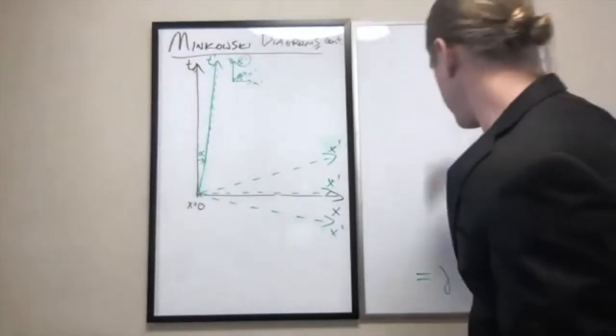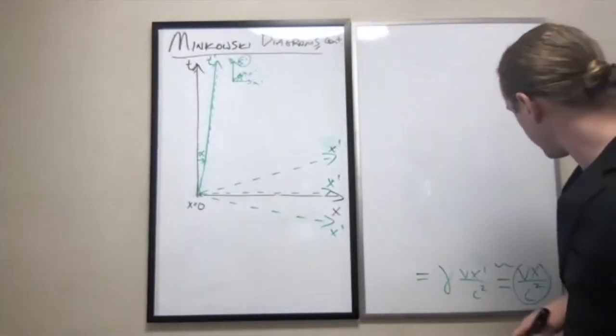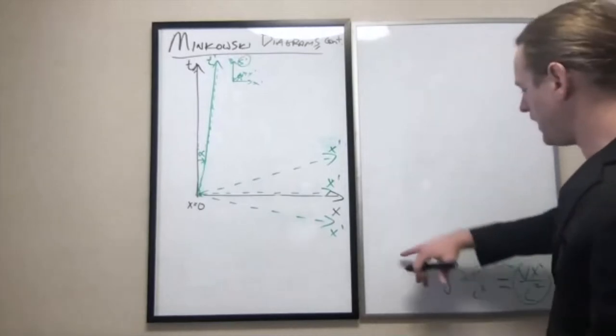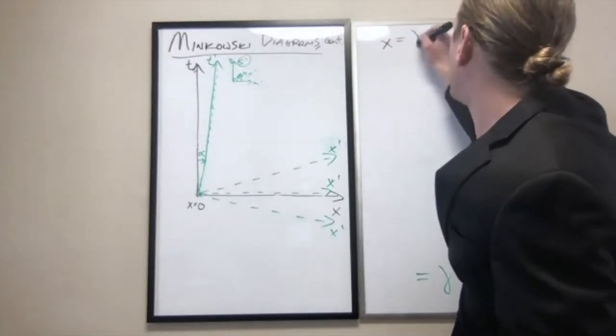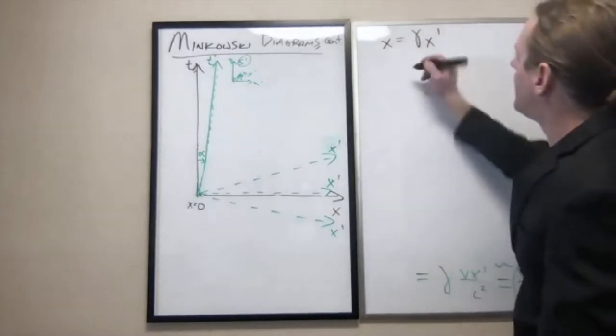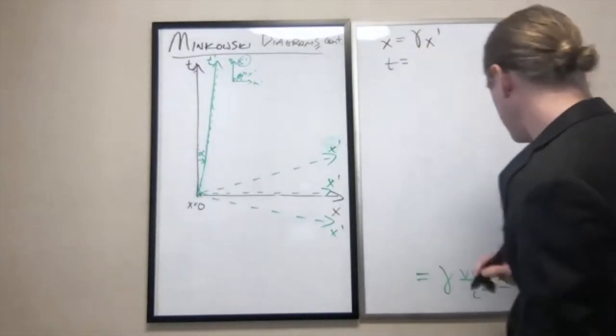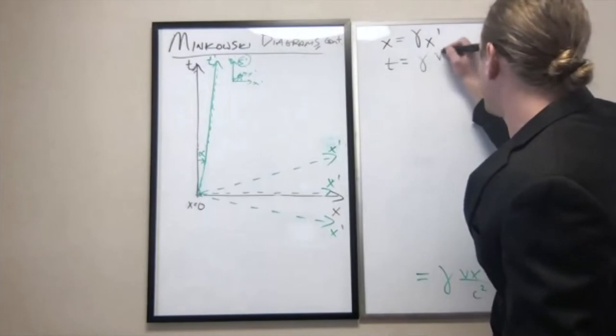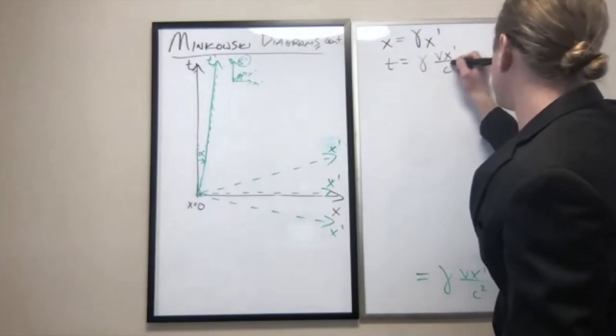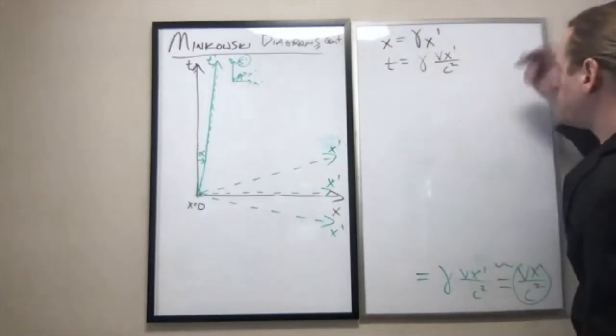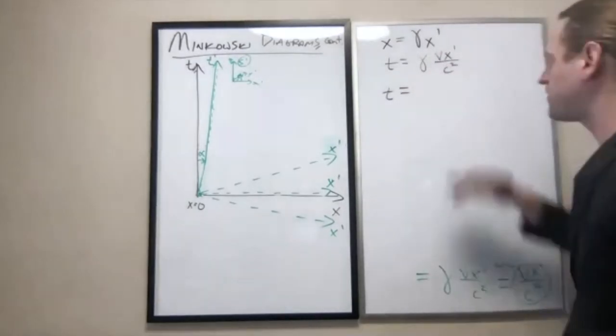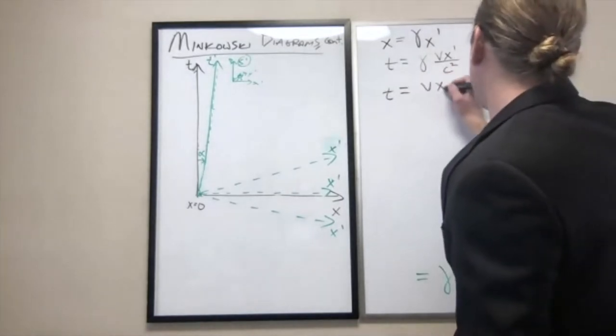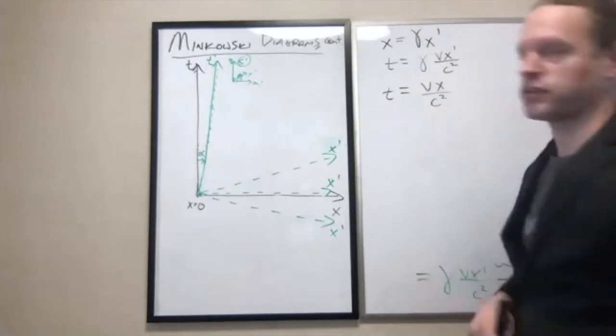Okay, so I'm just going to restate exactly what we derived before. What we found is that when x equaled gamma x prime, and when t equaled gamma vx prime over c squared, when we combine those two things, the result that we found was the gammas cancel, and we just had t equals vx over c squared.